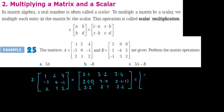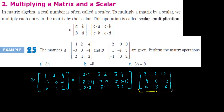The result is: 3×1=3, 3×2=6, 3×4=12, 3×(−3)=−9, 3×0=0, 3×(−1)=−3, 3×2=6, 3×1=3, and 3×2=6. So this resulting matrix is equal to 3A.